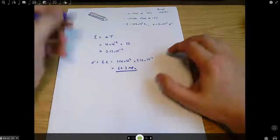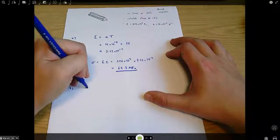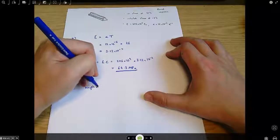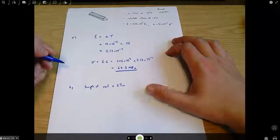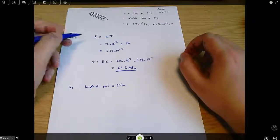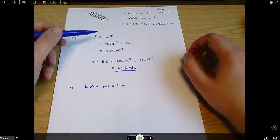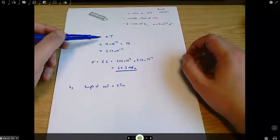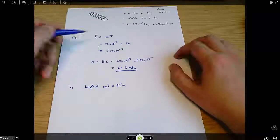Now in the second part of this question we're told the length of the rail is 27 meters. So, what we're going to do, we can use the calculated strain to find the calculated change in length first.